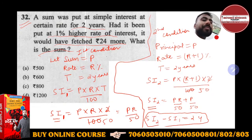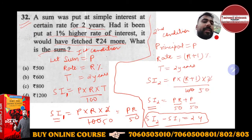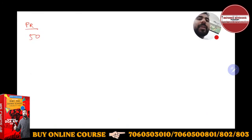So what is SI2 given to you? We calculated PR / 50 + P / 50 minus SI1, which is PR / 50, is equal to 24.